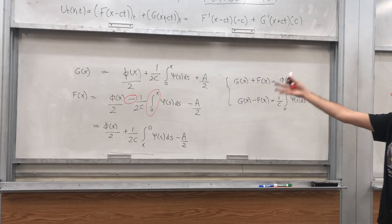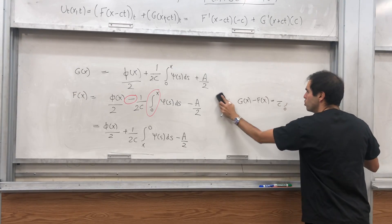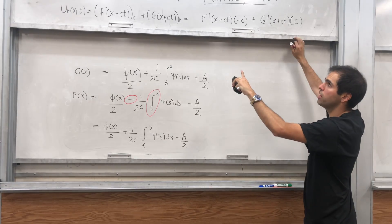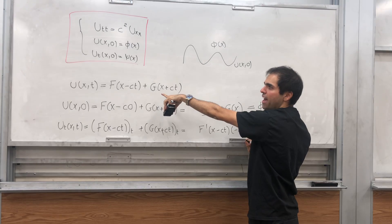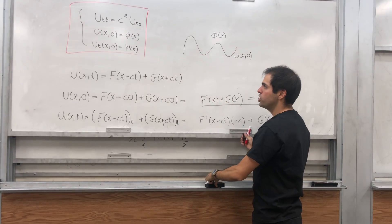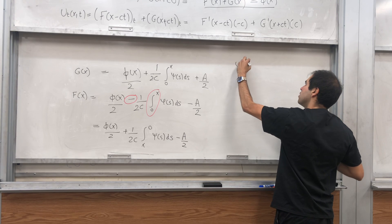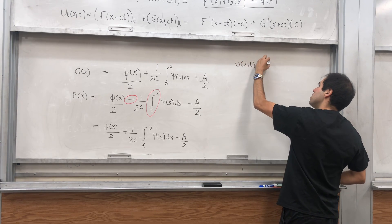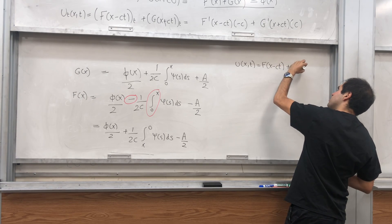Which is great! We solved for F, we solved for G, and then all we need to do is plug in our formula for U. Remember U was F of x minus ct plus G of x plus ct.